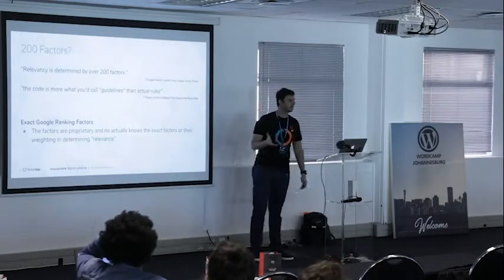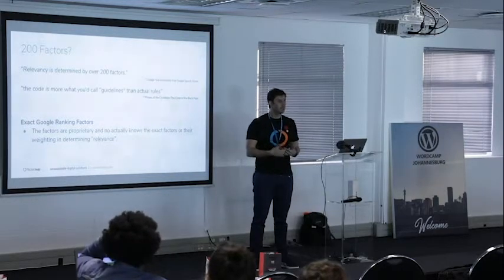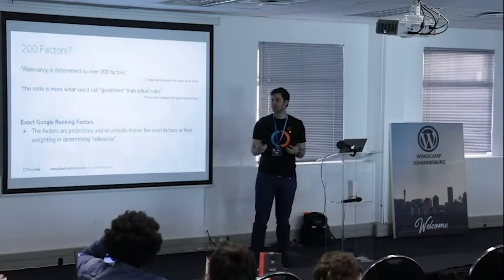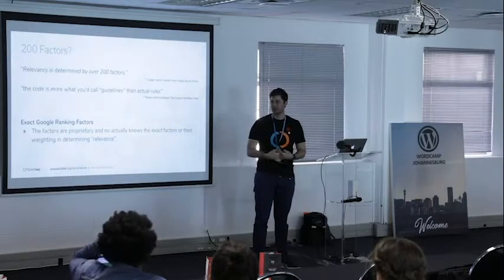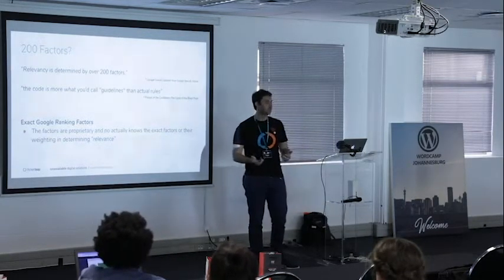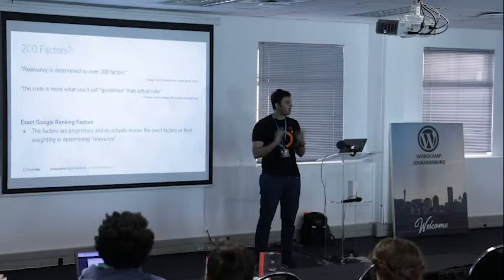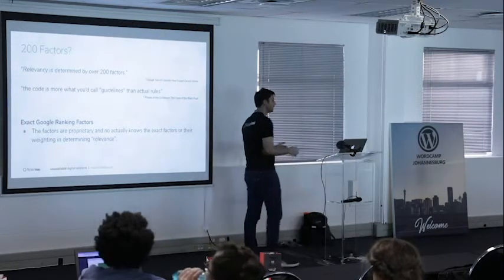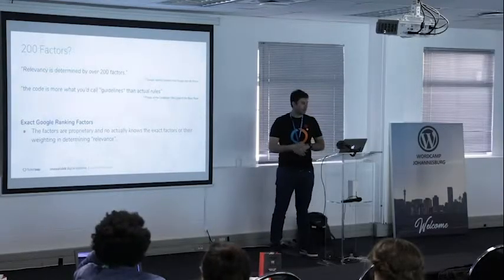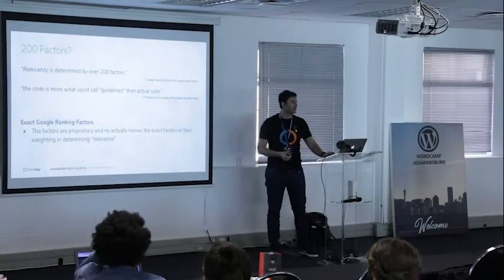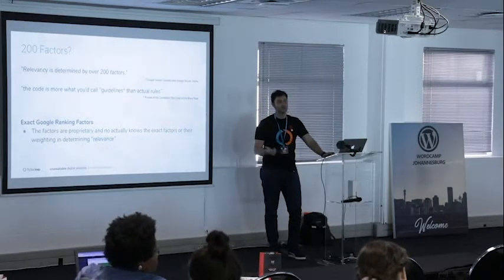There's rumor of a mysterious 200 factors that Google uses to rank things. The reality is no one actually knows. It's Google's proprietary, secret, magic mystery that they use to make lots and lots of money. They don't tell you because if you know, you can find a way to cheat — and they don't want that because they want people to trust it. So if you've heard of 200 factors, I'd use the Pirates of the Caribbean quote: the code is more what you'd call guidelines than actual rules.